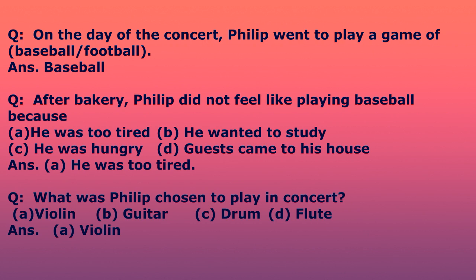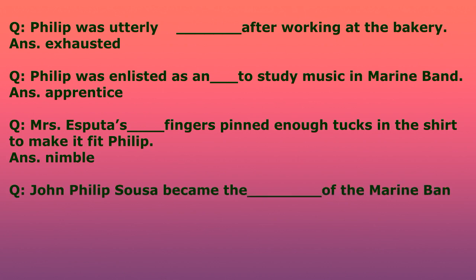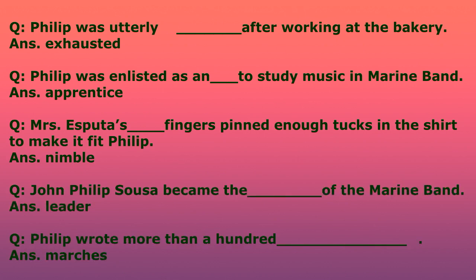Next question: Philip was utterly dash after working at the bakery — fill in the blank. The answer is exhausted. Philip was utterly exhausted after working at the bakery. Philip was enlisted as an apprentice — a learner — to study music in the Marine Band.